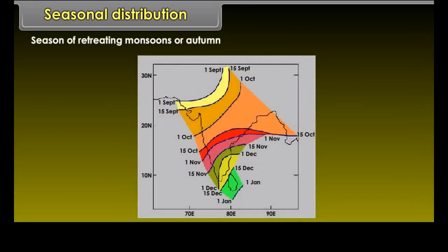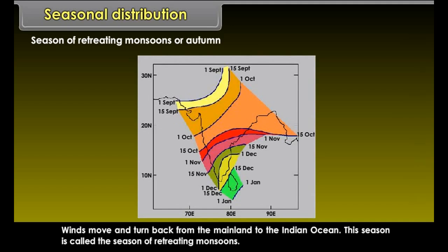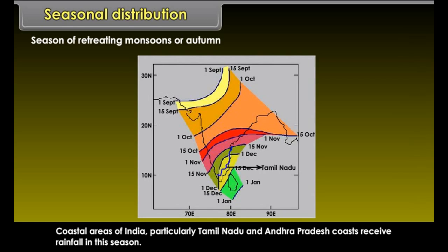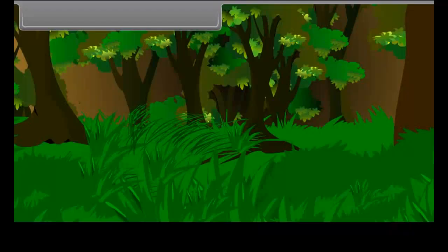The season of retreating monsoons, or autumn, occurs when winds move and turn back from the mainland to the Indian Ocean. Coastal areas of India, particularly Tamil Nadu and Andhra Pradesh coasts, receive rainfall in this season.